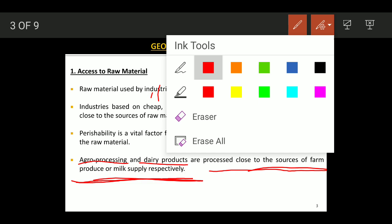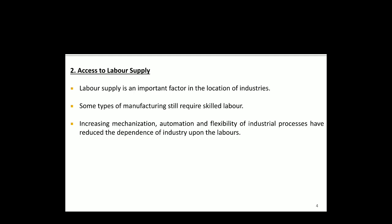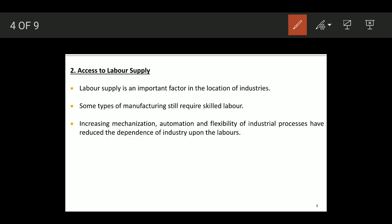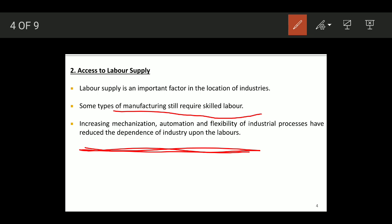The second geographical factor is access to labor. Labor supply is an important factor in the location of industry. Both skilled and unskilled labor are required. However, increases in mechanization, automation, and flexibility of industrial processes have reduced the dependence of industry on laborers.